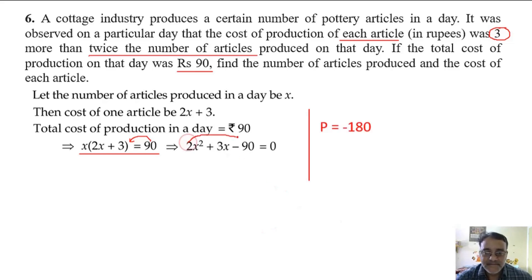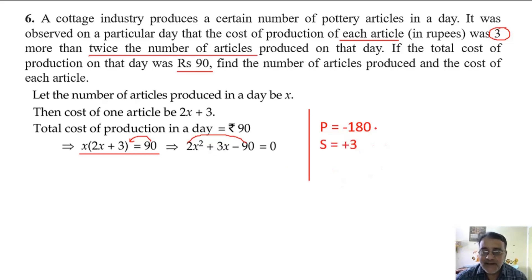The sum of the two factors we need is plus 3. The product is 180, so we have to find two factors of 180 such that their difference is 3.